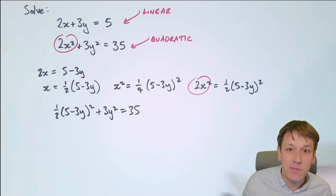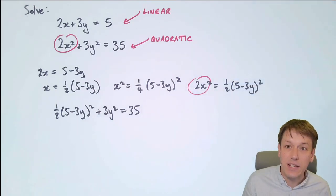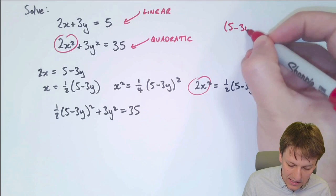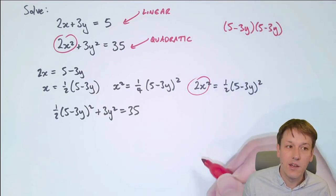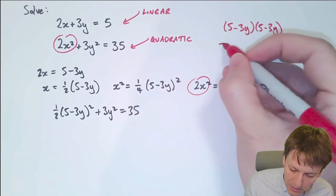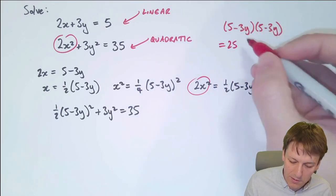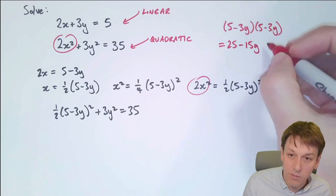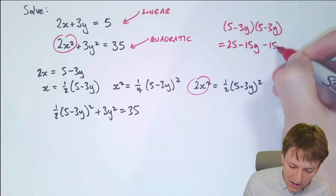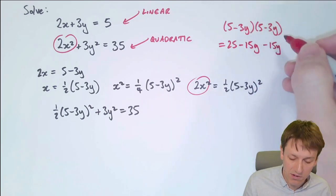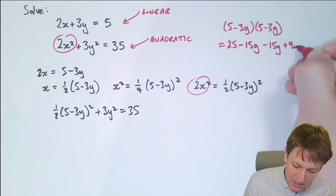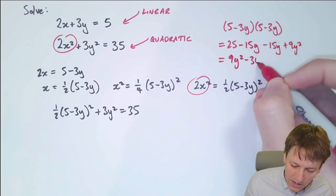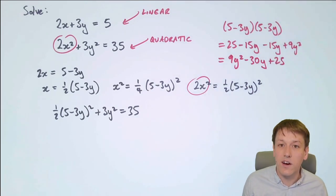The next step will be to multiply out these brackets, and don't forget when you've got 5 minus 3y all squared like this, you can't just do 5 squared and 3y squared, it's 5 minus 3y multiplied by 5 minus 3y. So multiplying out all the terms, I get 5 times 5 is 25, 3y times 5 is 15y so minus 15y, another minus 15y, and then minus 3y times minus 3y gives me 9y squared. Overall this gives me 9y squared minus 30y plus 25.